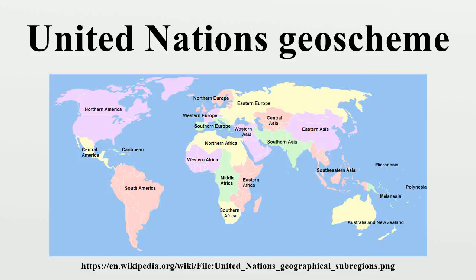The United Nations Geo Scheme is a system which divides the countries of the world into macro-geographical regional and sub-regional groups, which was devised by the United Nations Statistics Division based on the M49 coding classification.